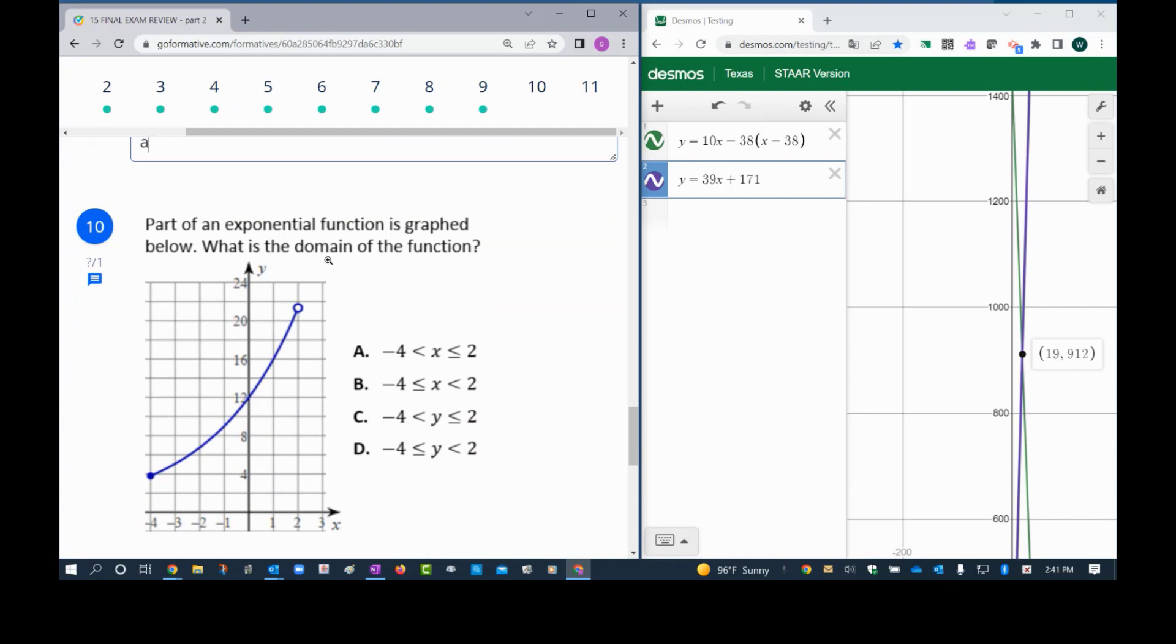Here I have two more problems to go. The next question is what is the domain. Domain is the value of x, so go ahead and eliminate letters C and D because they both have y, so we want the value of x. To find x you can imagine your pencil on the vertical, and as you move from the left to the right, first place you touch is negative 4.